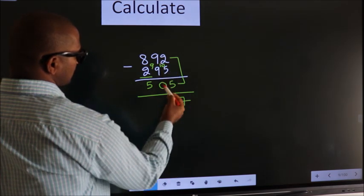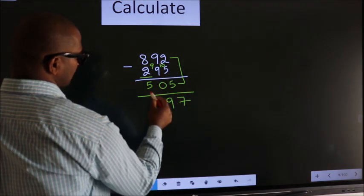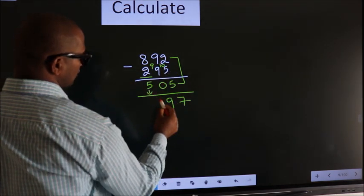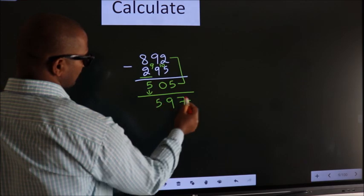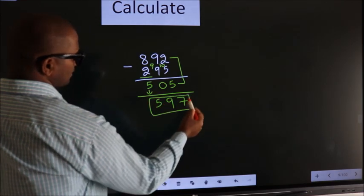9 plus 0 equals 9. The first digit you should write as it is. So, this is our answer.